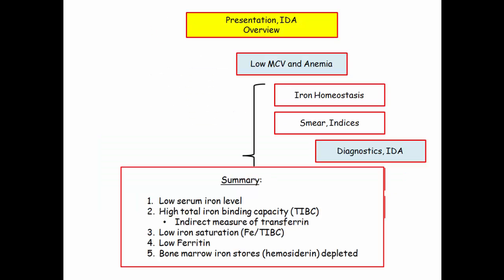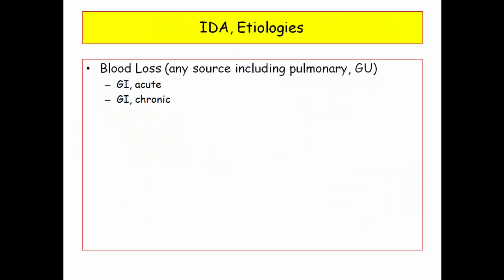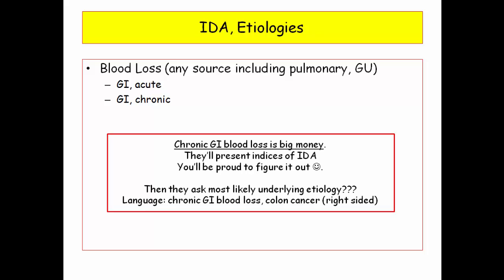Those are the diagnostic studies. Be familiar with these values — it is their very favorite way to come after you when discussing iron disorders of all sorts. We'll finish up iron deficiency anemia with a brief discussion of etiologies. Blood loss from any cause will cause iron deficiency anemia, including pulmonary bleeding, GU bleeding, and blood donation. Whereas acute blood loss can lead to iron deficiency anemia, that isn't the typical scenario. Chronic GI blood loss is the typical vignette — losing a little bit of iron over an extended time course sets the stage for mystery.